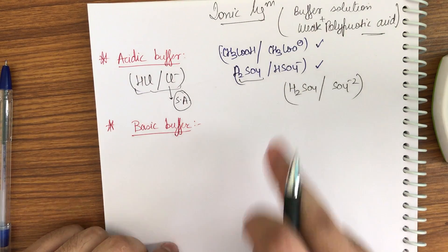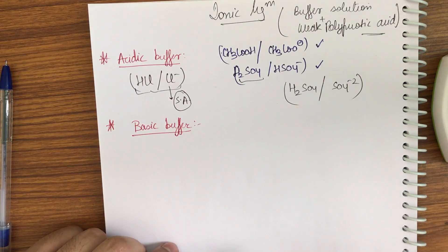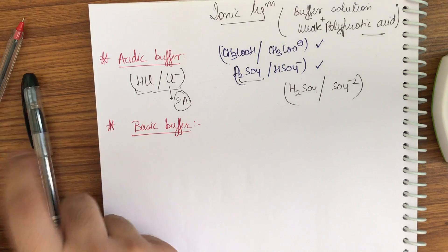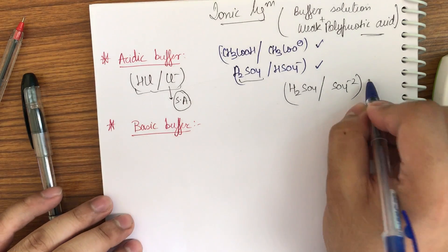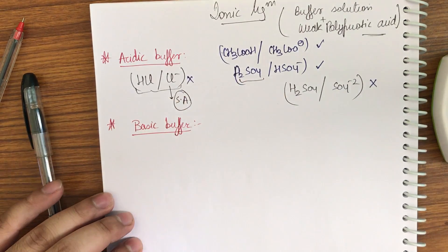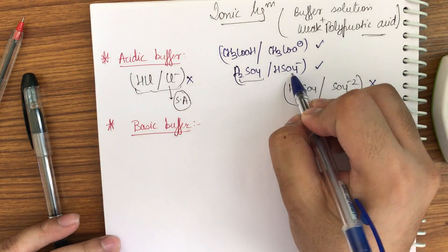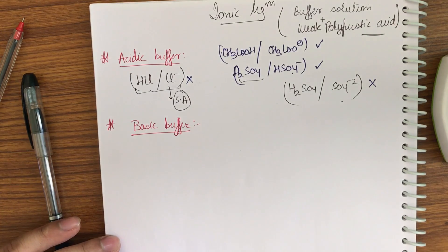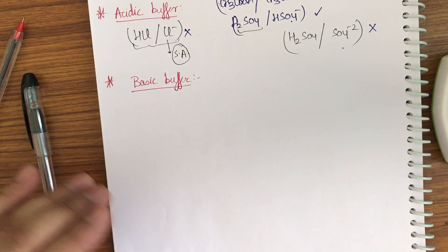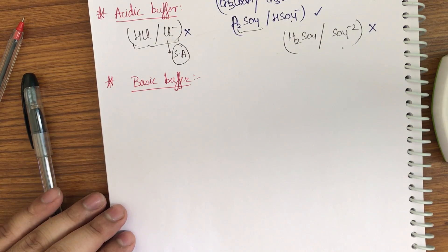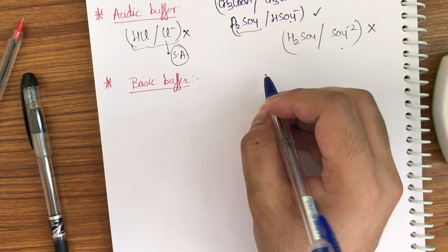Another case: if I take H₂SO₄ and SO₄²⁻, that means I'm going from H₂SO₄ → HSO₄⁻ → SO₄²⁻, removing two protons. This is not a buffer, because you must remove only one proton. So H₂SO₄/HSO₄⁻ is a buffer, but H₂SO₄/SO₄²⁻ is not.